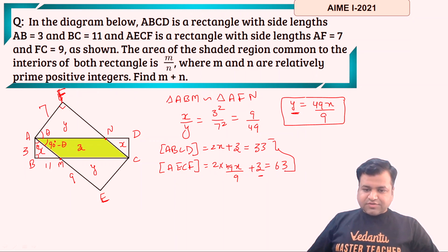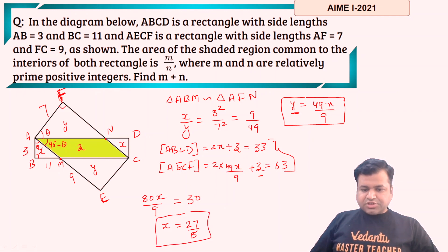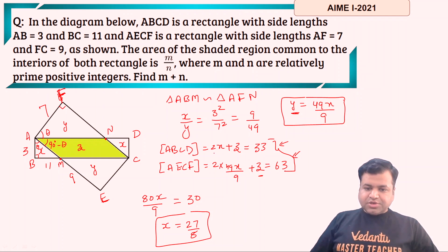The area of rectangle AECF will be 2y, and substituting y = 49x/9, we get 2 × (49x/9) + z = 9 × 7 = 63. Now from these two equations we need to find the value of z, which is the shaded region. Subtracting the two equations: (98x/9 − 18x/9) = 80x/9 = 30. So x = 27/8.